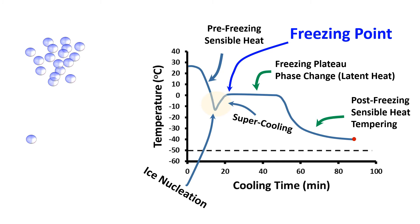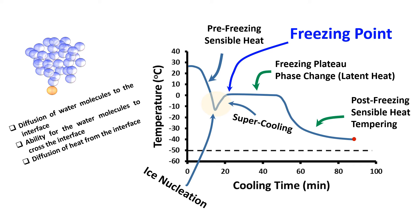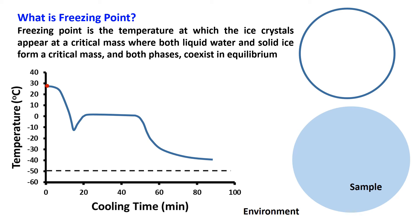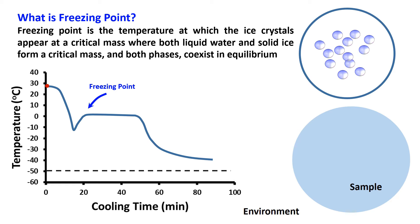The freezing plateau is the ice growing phase. The rate of ice growth is dependent on three factors: the diffusion of water molecules to the interface, the ability of water molecules to cross the interface, and the diffusion of heat from the interface. The freezing point is the temperature at which ice crystals appear at a critical mass where both liquid water and solid ice co-exist in equilibrium. Unstable ice formation can be observed during supercooling before this equilibrium stage.